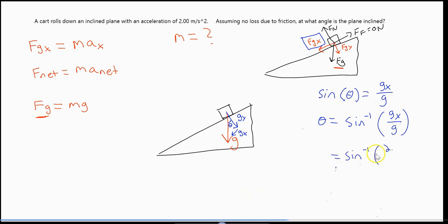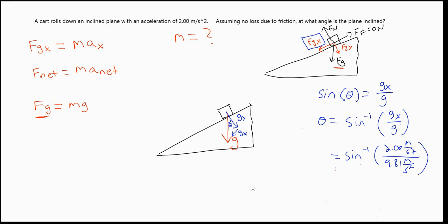Now we just plug in. We know 2.00 meters per second squared because that's what we're told, and we know the acceleration due to gravity on Earth is 9.81 meters per second squared. It's very easy to plug that into a calculator, and we find 11.8 degrees.